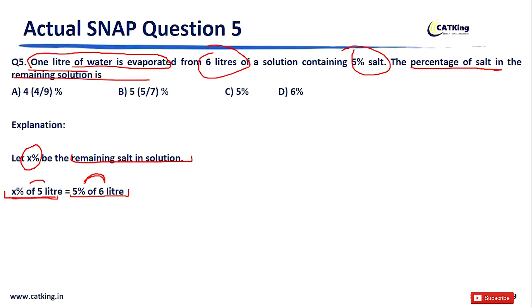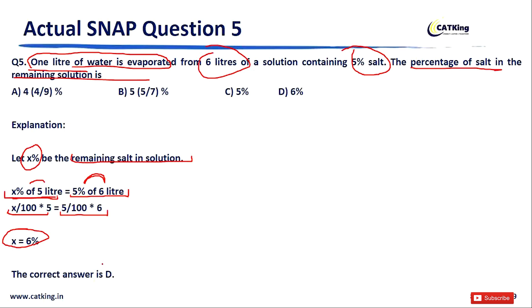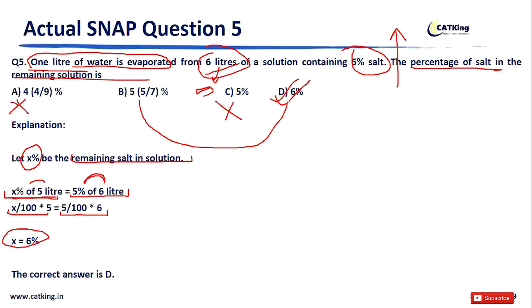Solving: (X/100) × 5 = (5/100) × 6, which gives X = 6 percent. Hence the correct answer is option D: 6 percent. We know the percentage must be more than 5%, so options A and C are definitely wrong. You're left choosing between B and D, which makes this faster to solve. Let's move on to question number 6.